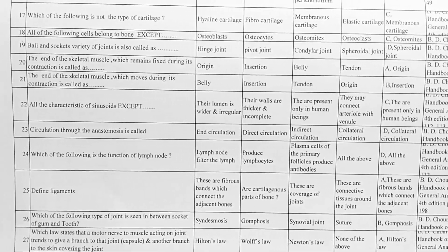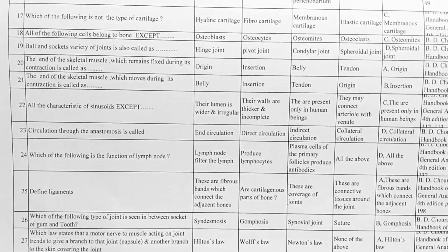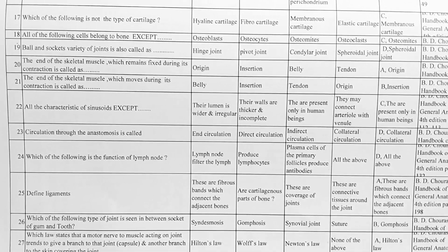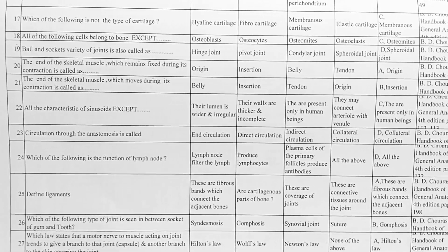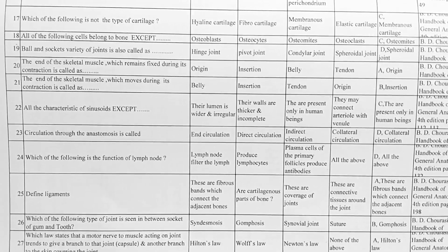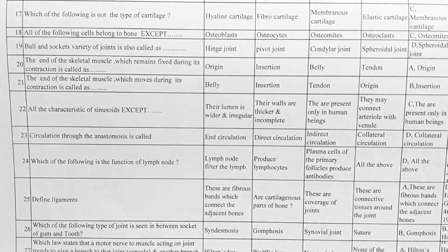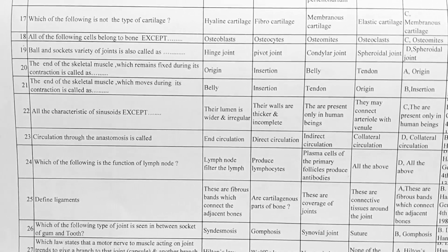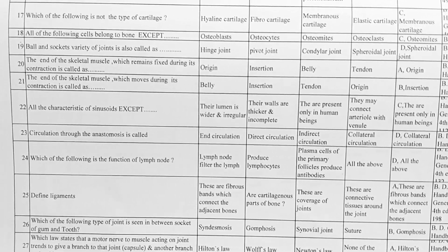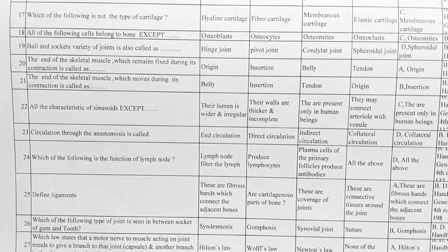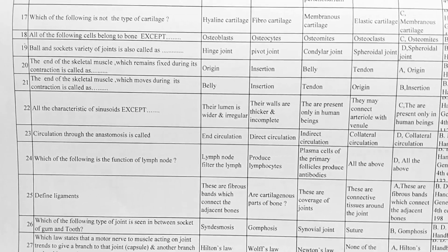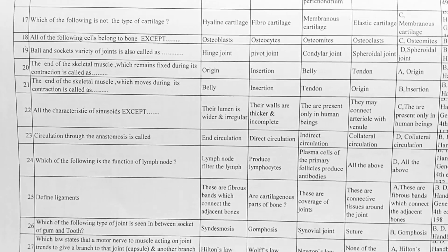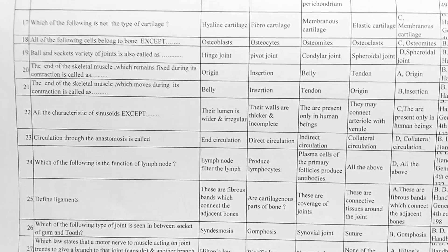Next, the end of the skeletal muscle which remains fixed during its contraction is called — options: A. origin, B. insertion, C. belly, D. tendon. Correct answer is A, origin. Next, the end of the skeletal muscle which moves during its contraction is called — options: A. belly, B. insertion, C. tendon, D. origin. Correct answer is option B, insertion.